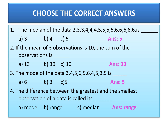Fourth question: The difference between the greatest and the smallest observation of a data is called its dash. Options given: mode, range, median. Mode means repeated number — not the answer. Median means the middle number — also not the answer. The difference between greatest and smallest observation comes under range. So the answer is range. To summarize: median is the middle number, mean is total divided by number of observations, mode is the repeated number, and range is the difference between greatest and smallest observation.